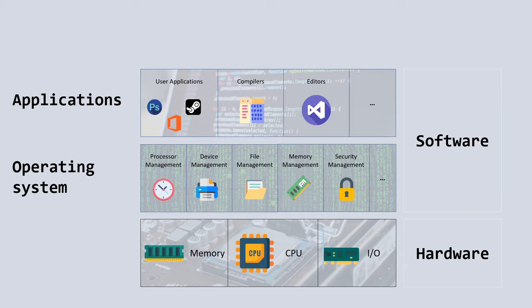On top of the operating system we have our conventional applications such as Microsoft Office, Photoshop, and games. Here we also find applications needed to develop our own software, such as compilers and editors. And finally, on the very top, we find the end user interacting with the applications.